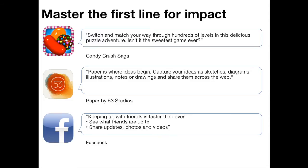So what is a good first line? We've found three examples, picked from the point at which they truncate on a store like Google Play. Candy Crush Saga is perhaps my favourite: 'Switch and match your way through hundreds of levels in this delicious puzzle adventure. Isn't it the sweetest game ever?' Not only does it explain what the game is about and detail that it has hundreds of levels, it keeps that sweet and friendly tone with a play on words — 'delicious puzzle adventure,' 'the sweetest game ever' — which really creates a sense of fun.